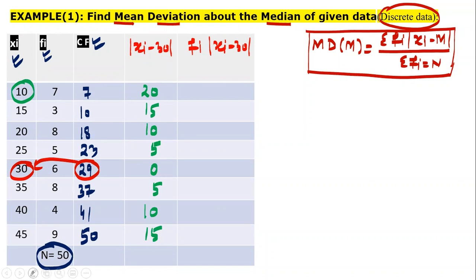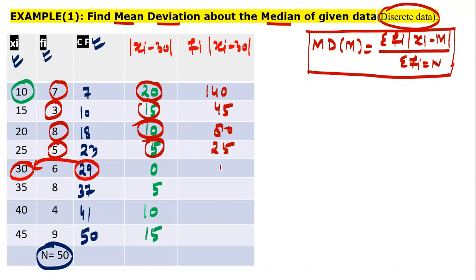Next is we will multiply them. 15 into Fi. 7 into 20. That is 140. 3 into 15. 45. 10 into 8. 80. 5 into 5. 25. 0. 8 into 5. 4 into 10. 15. 15 into 9.